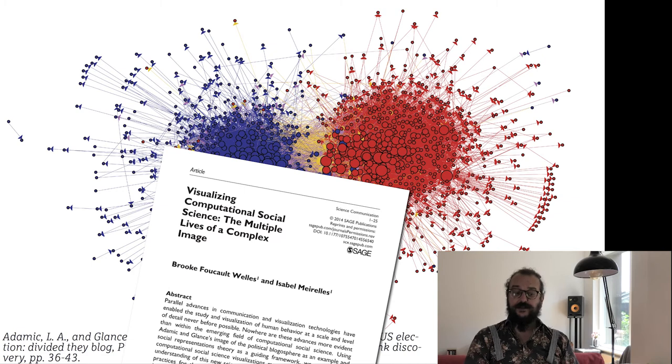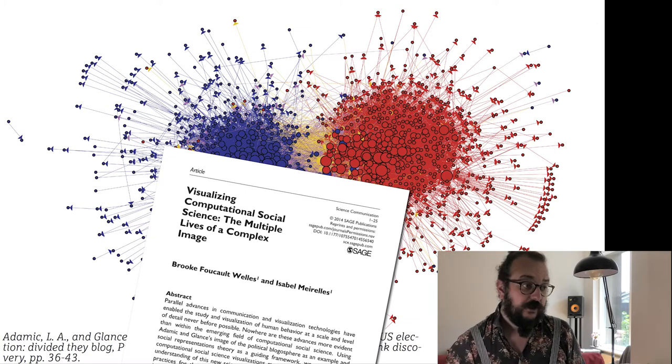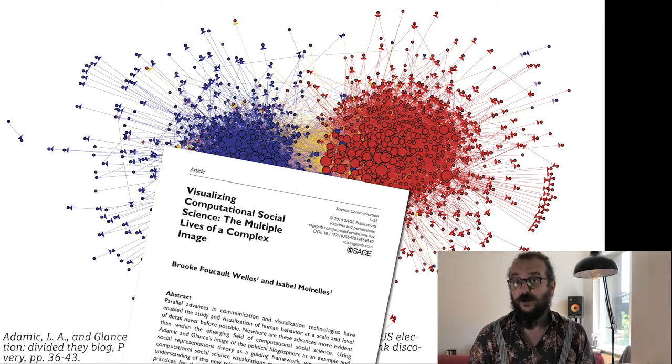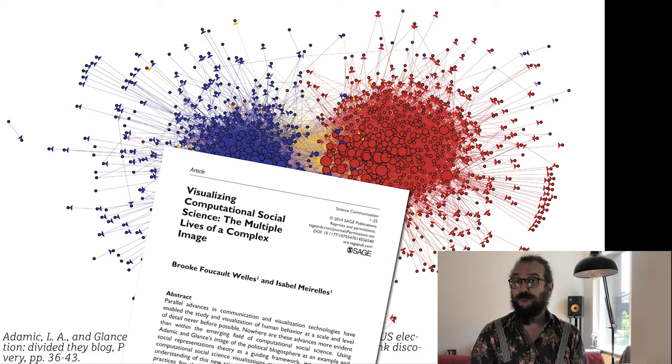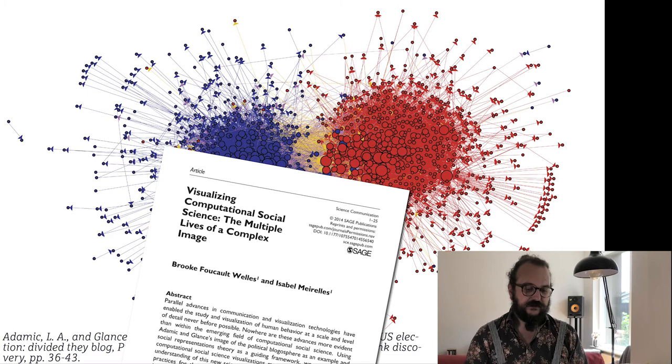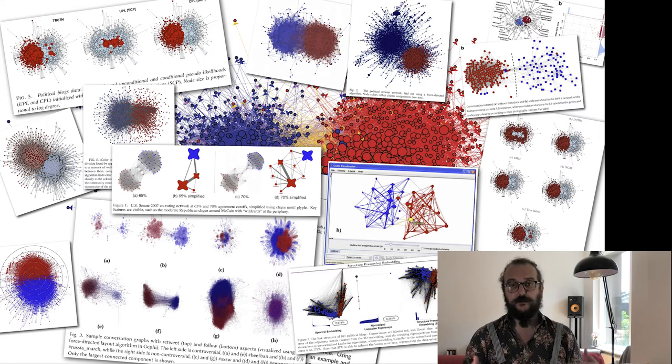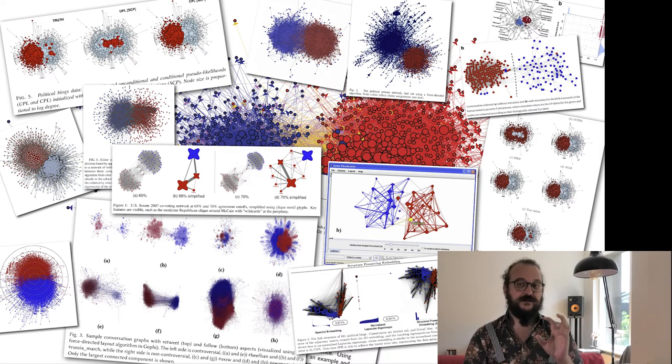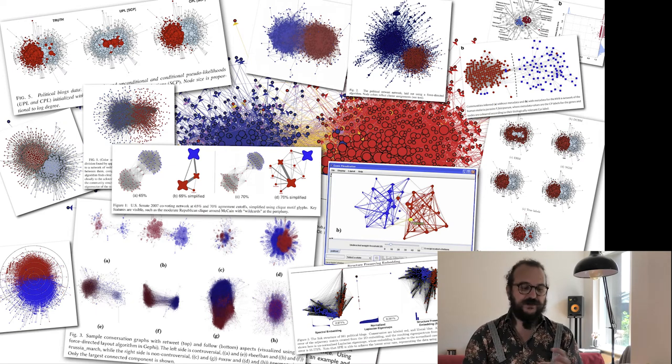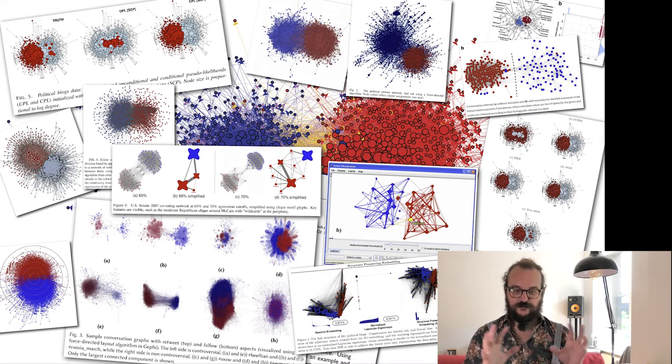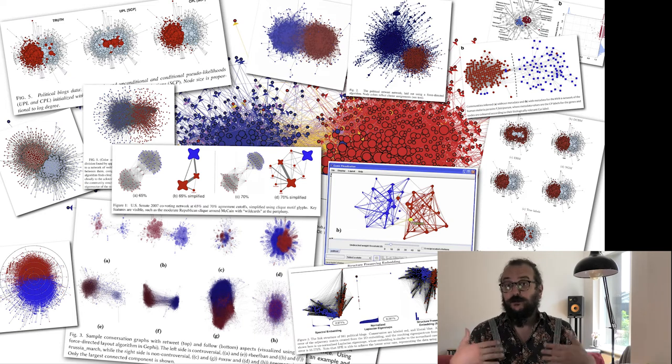This picture, the Divided They Blog picture, became super famous and circulated in the media and in other papers. It's a very successful story of how computational social science in the very beginning could talk to people in various ways. There is a very nice paper by Brooke Foucault-Wells and Isabel Marius about the circulation of that paper. But if you just look at the other paper who cites Divided They Blog, you are going to find a lot and a lot of these two clusters, one blue, one red. Sometimes it's even the same data set, but sometimes it's not. And you will still find this imprint of the original picture in the brains of all these authors, kind of as a landmark of what network science or network analysis can do for you.